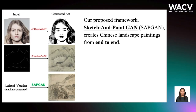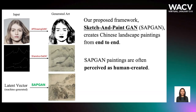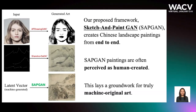Here are the main takeaways. Our proposed framework, Sketch & PaintGAN, creates Chinese landscape paintings from end to end. This means that, unlike previous artistic GANs, SAPGAN generates paintings without conditional input. SAPGAN paintings are often perceived as human-created. This work lays an important groundwork to allow for truly machine-original art.